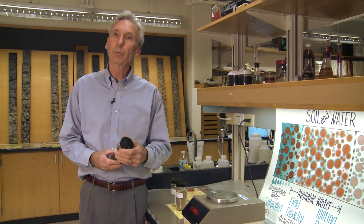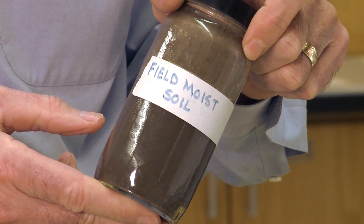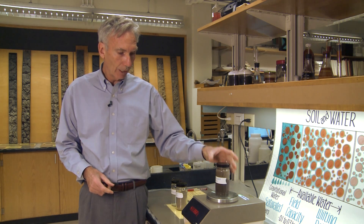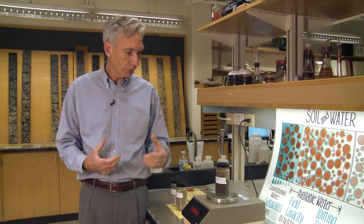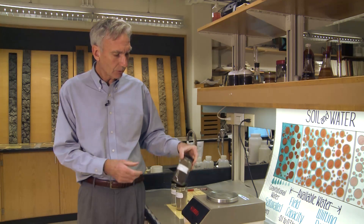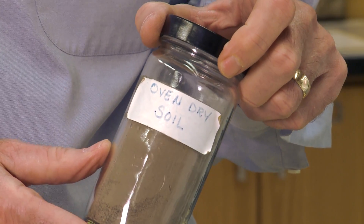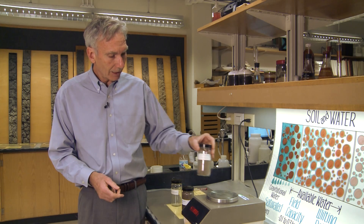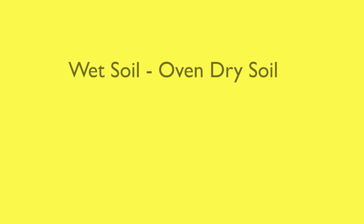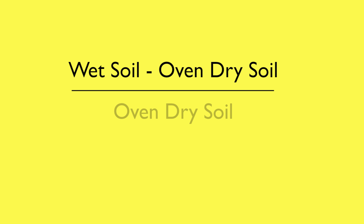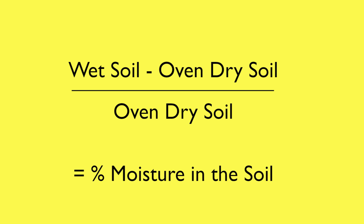In determining soil moisture in the field, we collect a moist soil sample, bring it into the lab, and weigh it — that gives us the weight of the moist soil. Then we dry it in an oven at 105 degrees centigrade to get the oven dry soil weight. To determine the amount of moisture in a soil, we take the wet soil weight minus the oven dry soil weight to get the weight of the water, then divide by the oven dry soil weight. That gives us the percent moisture in a soil.